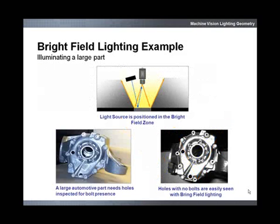In this example, placing the light source within the bright field zone illuminates the face of the part and creates contrast against the desired feature. Because the desired features are facing the camera, whereas the background may not be, light is directly reflecting and showing.